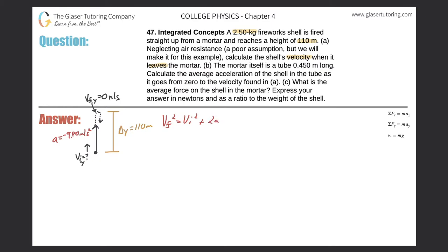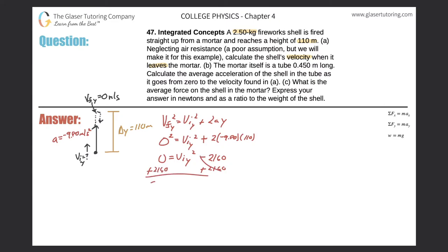The final velocity in the y-direction is zero. The initial velocity in the y-direction squared is the unknown. Plugging in: zero equals v₀y² plus two times negative 9.80 times 110. So zero equals v₀y² minus two times 9.8 times 110. Calculating two times 9.8 times 110 gives 2160 considering significant figures.